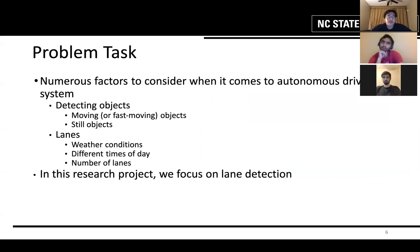When it comes to autonomous driving system, numerous factors must be considered. One is detecting objects whether they are moving very fast or still. Another one is lanes and the ability to detect lanes under different weather conditions, different times of day, or even the number of lanes. In this research project, we focus on lane detection.